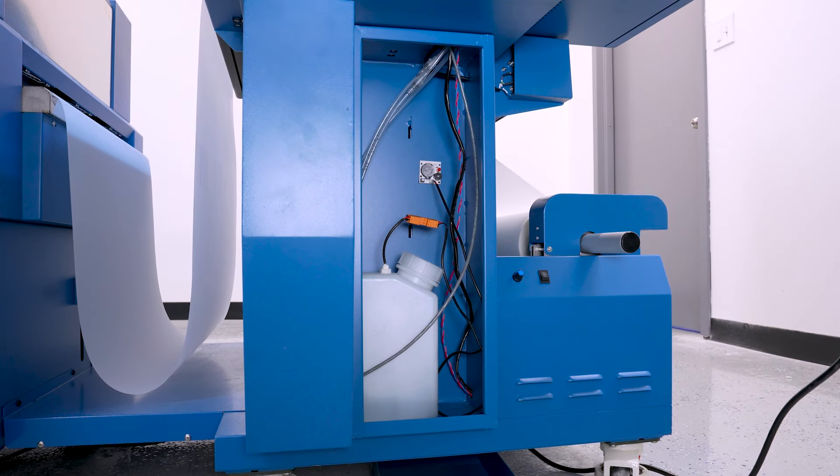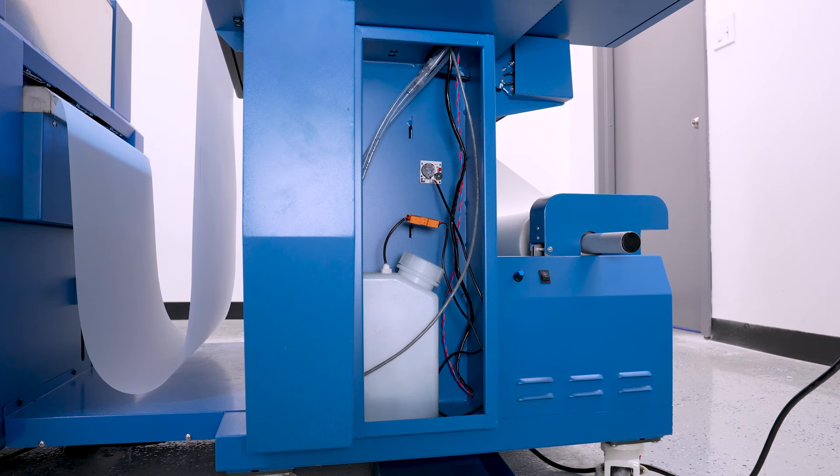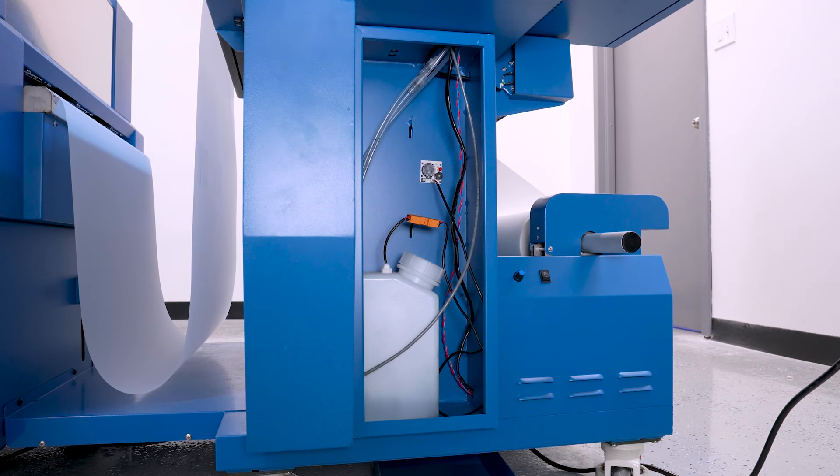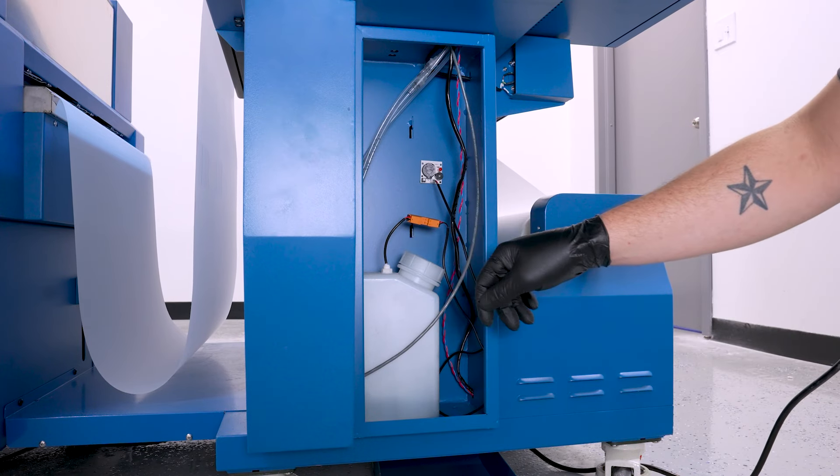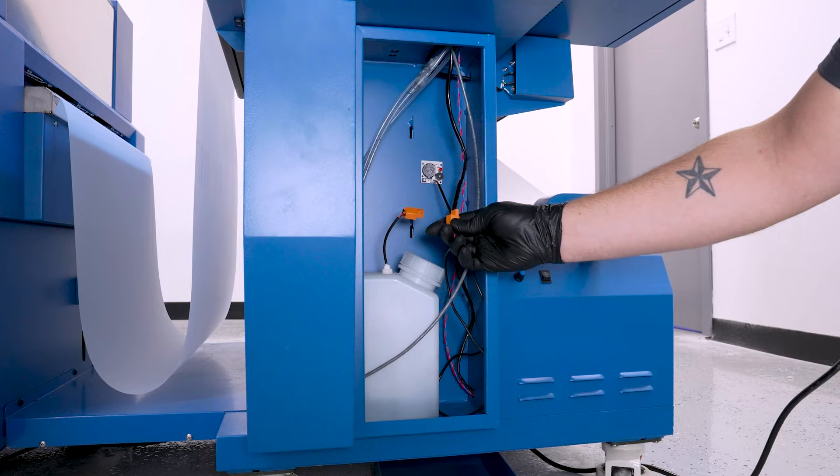Now that your alarm is turned off, the next thing that I need to do is I need to actually disconnect the sensor from the rest of the machine, which will make it a little bit easier to remove the tank from the machine. In order to do that, you have this orange plug right here, and all you have to do is just take it and disconnect it just like that.